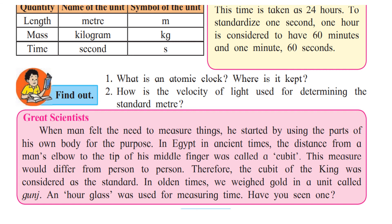Find out what is an atomic clock and where it is kept, and how the velocity of light is used for determining the standard meter. To check your answers, you can visit our website at www.jkacademypro.com — you'll get the link in the description box below.